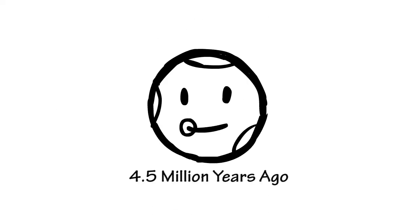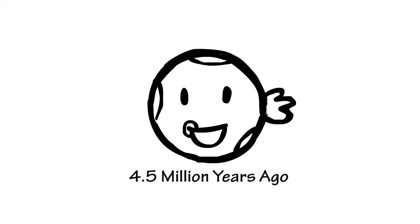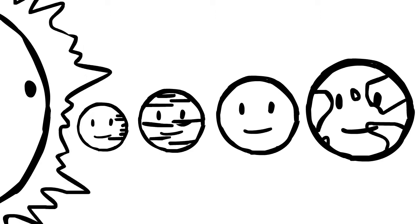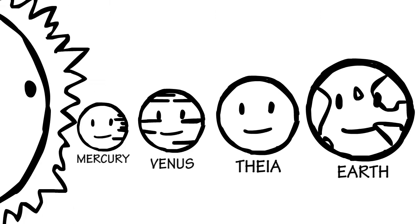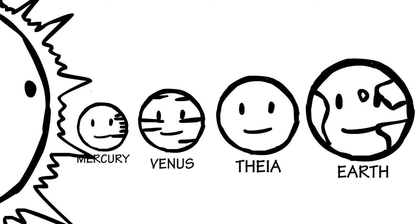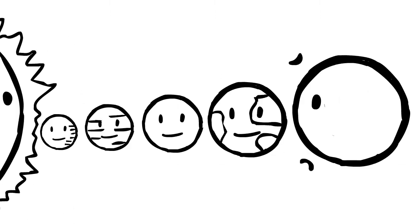How was the moon born? 4.5 million years ago, there was a planet called Thea circling around the sun, which was the size of Mars.